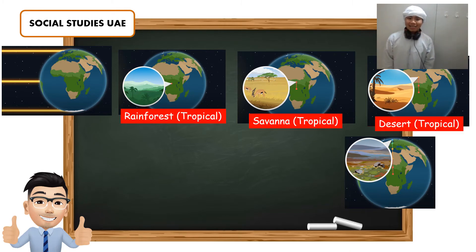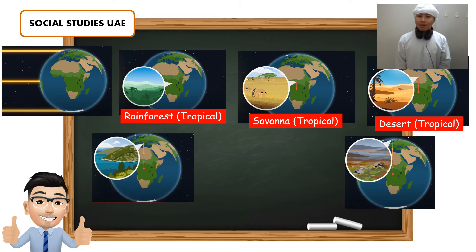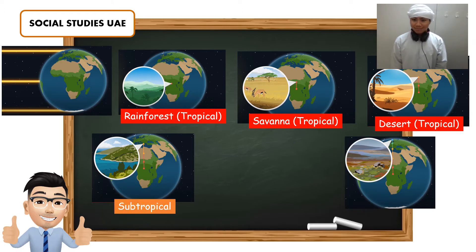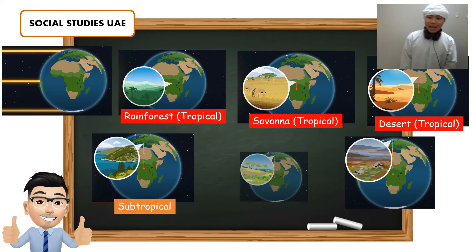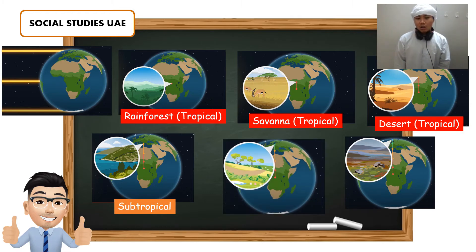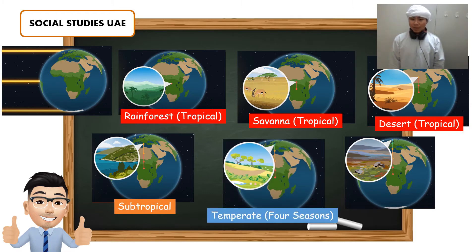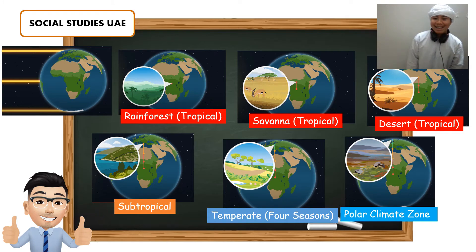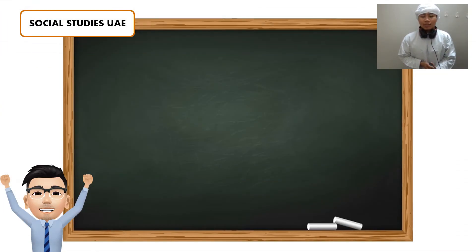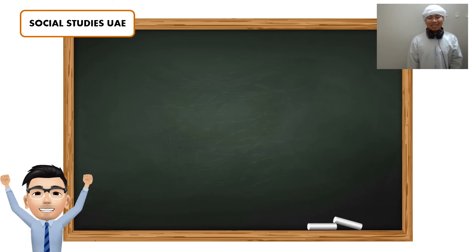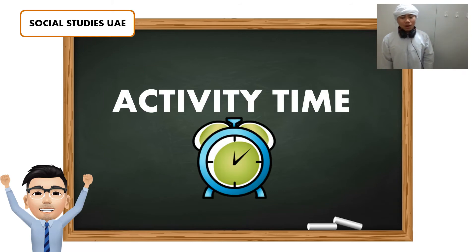We have the tropical rainforest, the tropical savannah, and the desert. We also talked about the subtropical, the temperate with four seasons, the breeze, and the very cold polar climate zone. Okay, let's move on to our activity time.